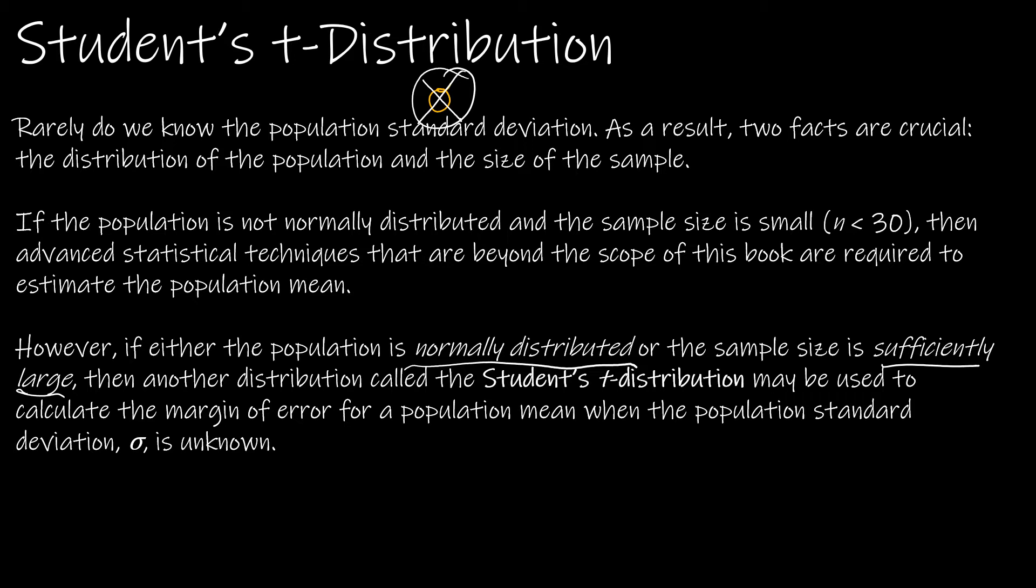You might be asking why didn't they name it after Gossett? Well, Guinness was very strict about sharing any kind of information with anybody. Even though this had nothing to do with brewing beer and had more to do with statistics, they did not want him to publish. So he published with someone else and they called it the student's t because they called Gossett the student.